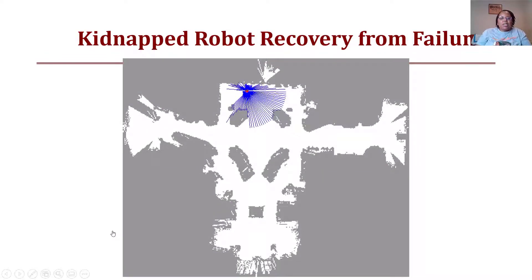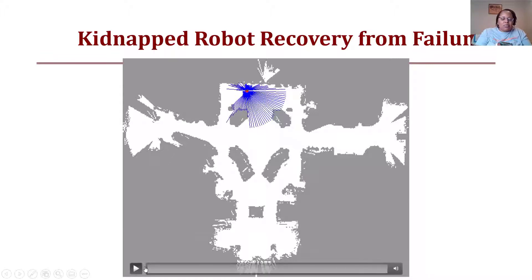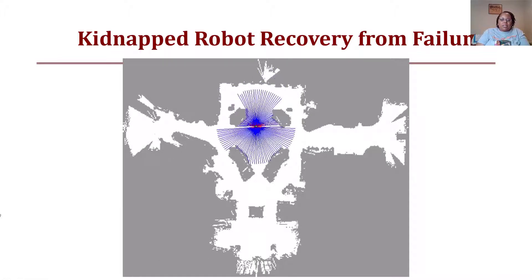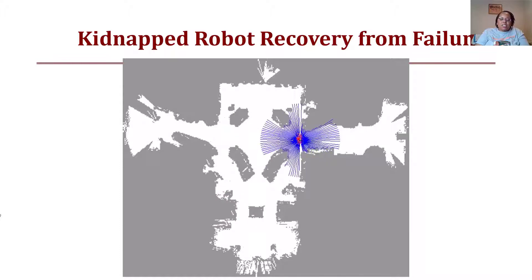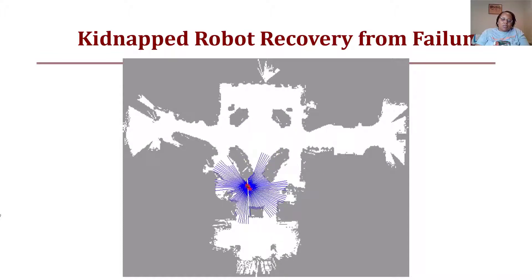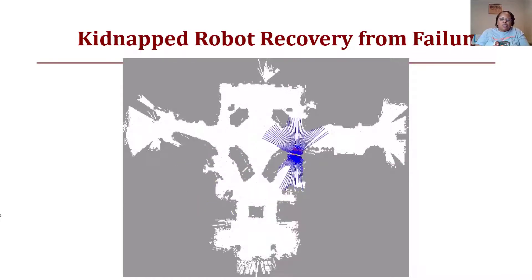The kidnapped robot can recover from failure. Because the uniform particle distribution covers the whole space, even if you pick the robot up and move it, as it iterates through steps — moving, resampling, and weighting — it should be able to converge again. Sometimes the robot has to completely start over and appears in multiple locations, but it will eventually recover from failure and relocalize. Once localized, if it gets kidnapped, it restarts with a uniform distribution and reconverges through the process.